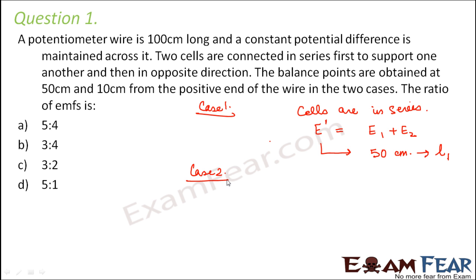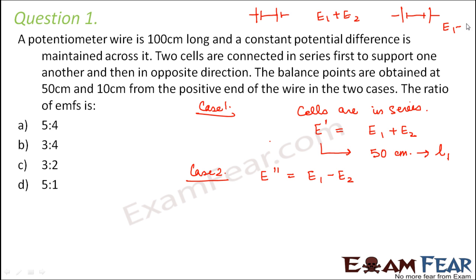In case two, the cells are again in series but in opposite direction, so the equivalent EMF will be E1 minus E2. When cells are connected in the same direction the net EMF is E1 plus E2, but when connected in opposite direction it is E1 minus E2. Corresponding to this, the balancing point L2 is at 10 centimeters.